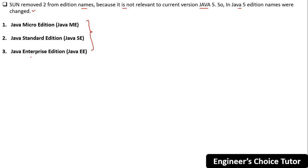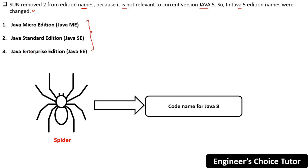One more point: "Spider" is the code name for Java 8. These code names are used internally within the Java or Oracle organization as project names. You should be aware that Spider is the internal code name for Java 8.